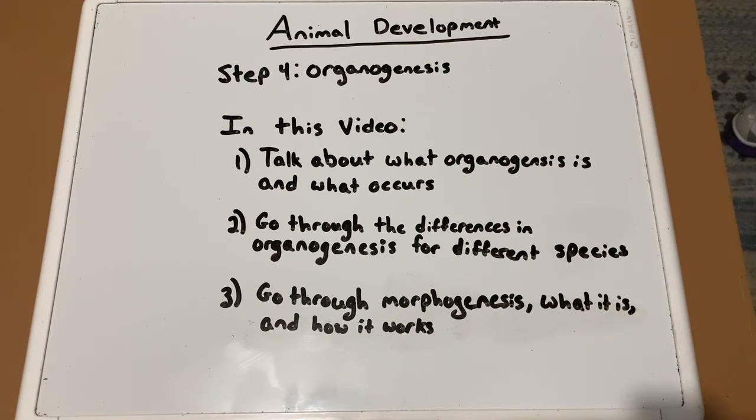In the previous video, we talked about the third step of animal development, which is gastrulation. In this video, we will talk about the fourth and final step, organogenesis.